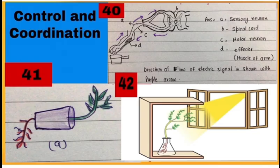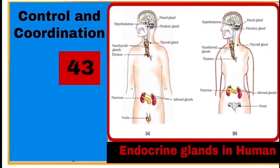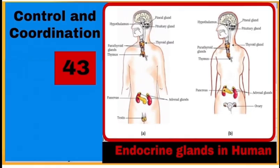42 is showing phototropism, where shoot is positively phototropic and root is negatively phototropic. 43 is showing location of endocrine glands in human male and human female.